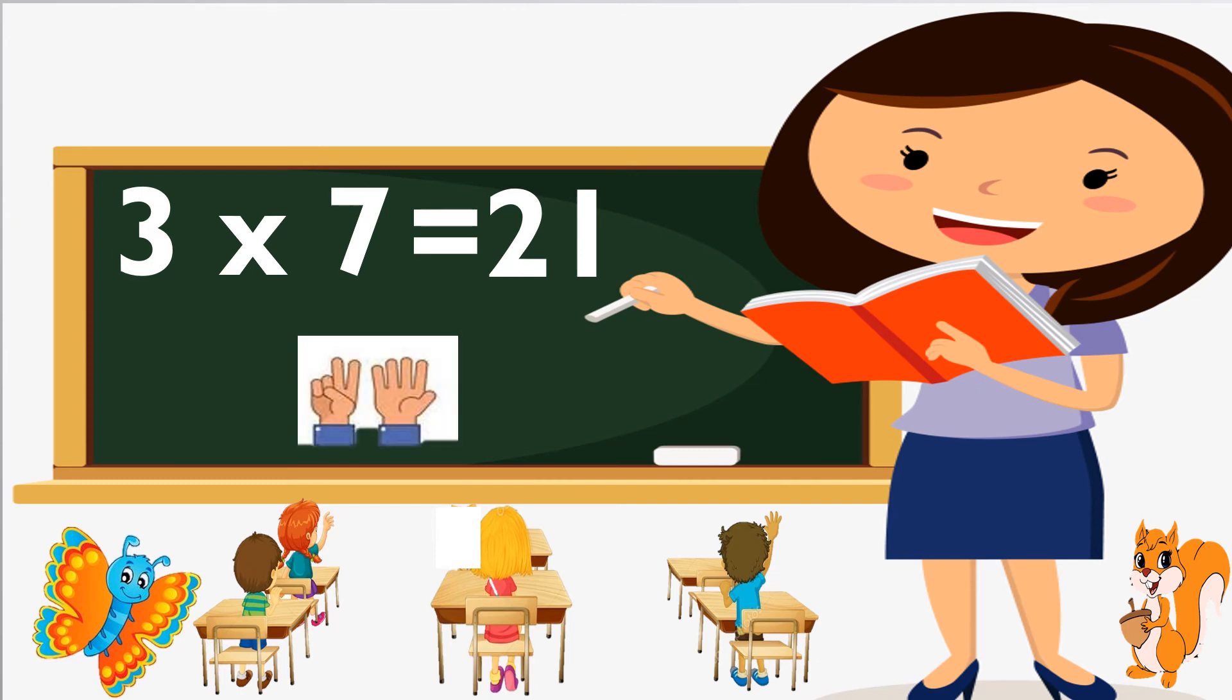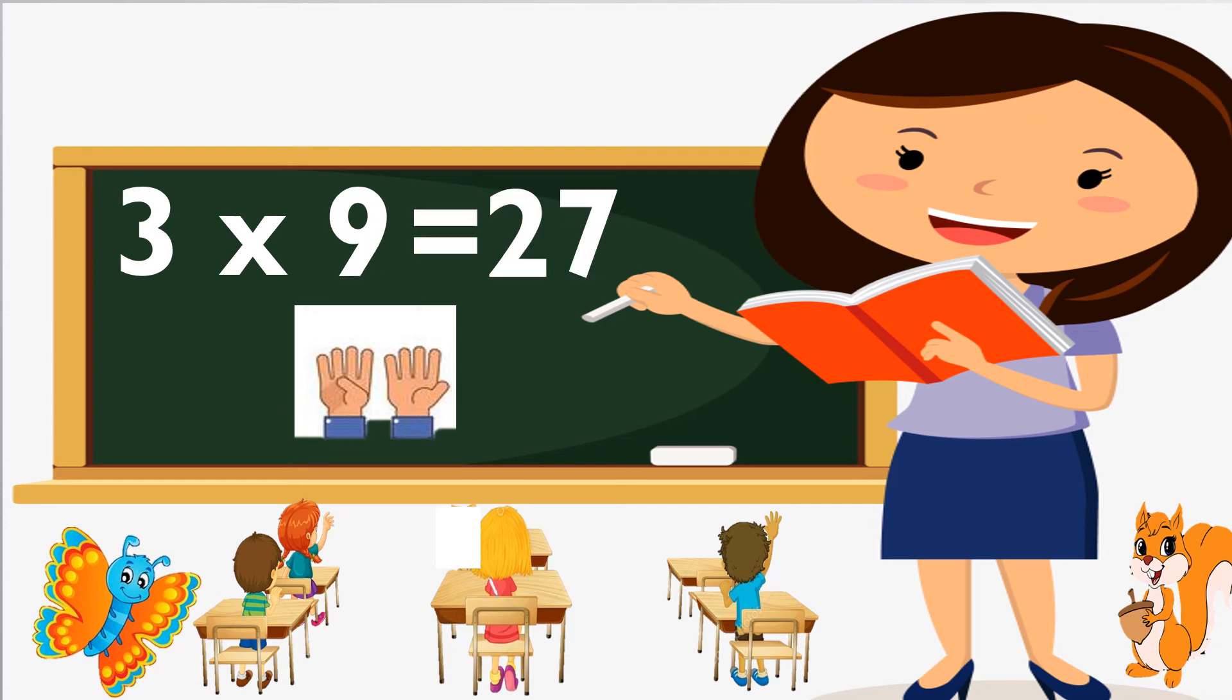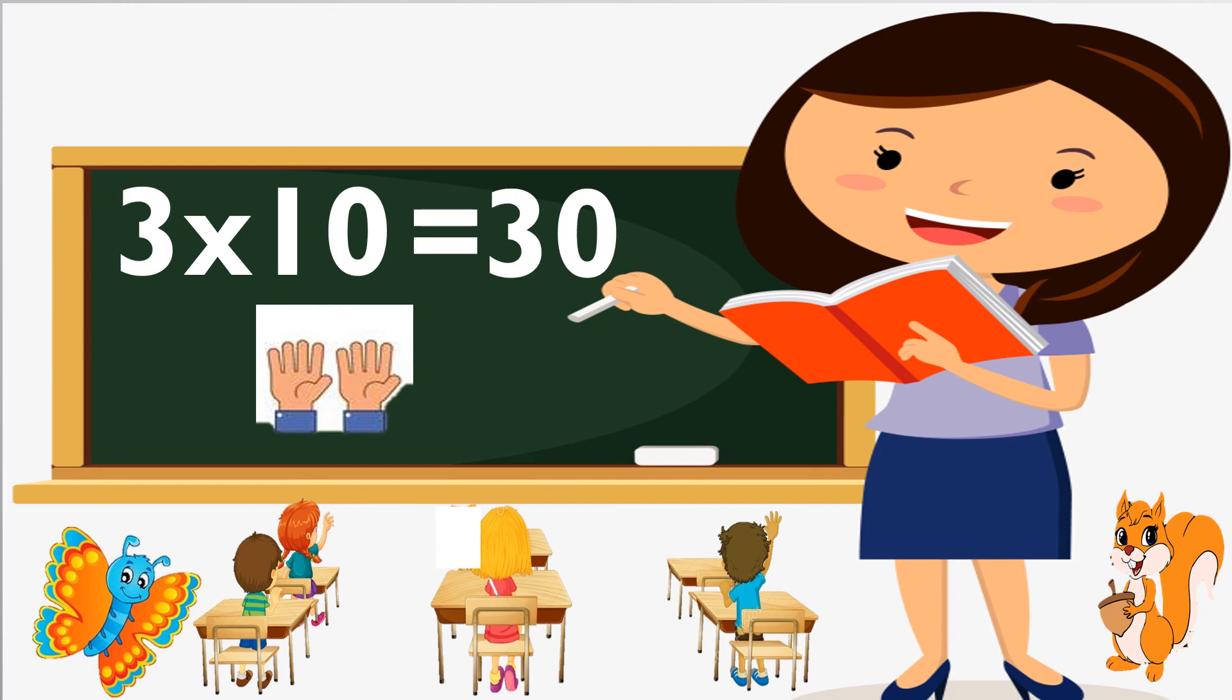Three sevens are twenty-one. Three eights are twenty-four, three eights are twenty-four. Three nines are twenty-seven, three nines are twenty-seven. Three tens are thirty, three tens are thirty.